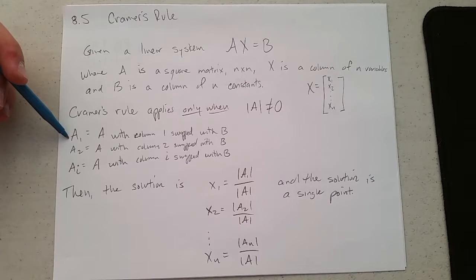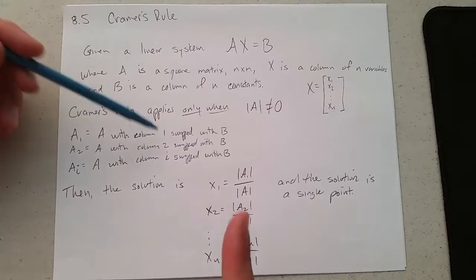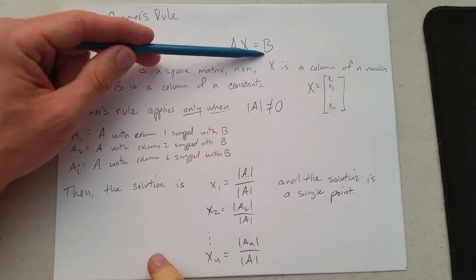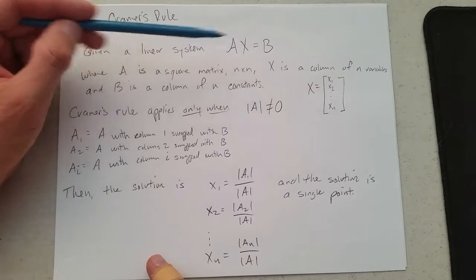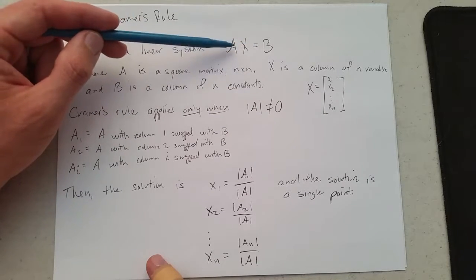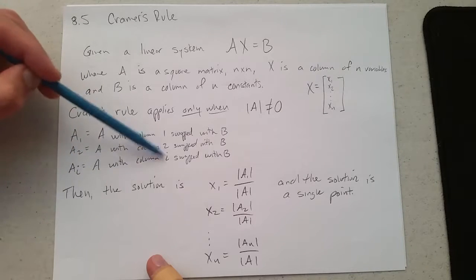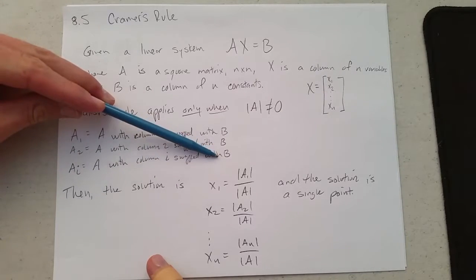A1 denotes A with column 1 swapped with the entries in B. A2 is A with column 2 swapped with the entries in B. In general, Ai will be A with column i swapped with the numbers in B.